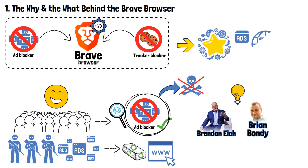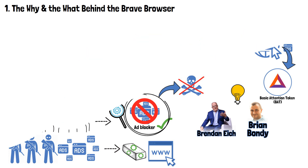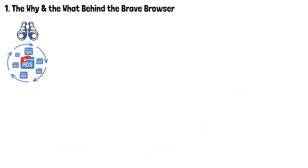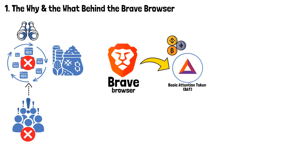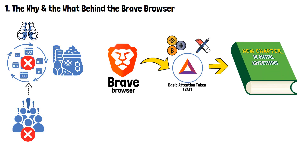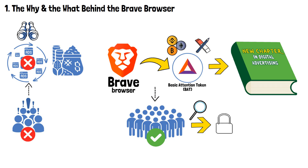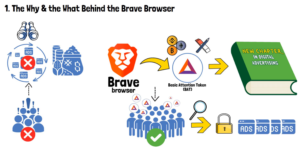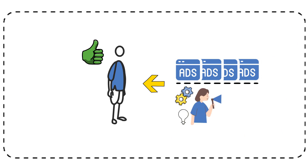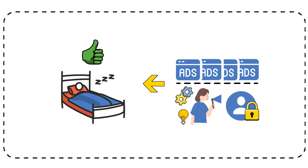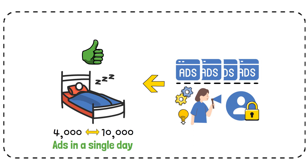But the true innovation is found in Brave's approach to online advertising, and this is where the Basic Attention Token comes in. Recognizing that the existing online advertising ecosystem was broken — where user attention was being commoditized without their consent — Brave introduced BAT. This cryptocurrency was designed to begin a new chapter in digital advertising. It allowed users to agree to view privacy-respecting, non-intrusive ads and earn BAT tokens in return. After all, the average person sees between 4,000 and 10,000 ads in a single day — such numbers are simply not normal.